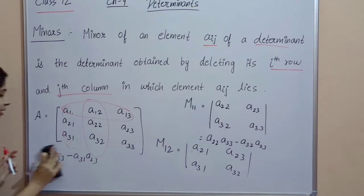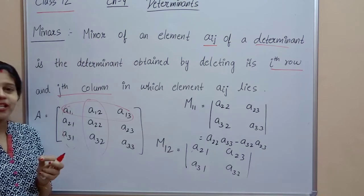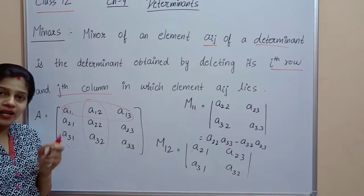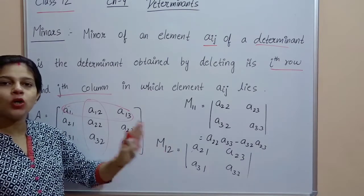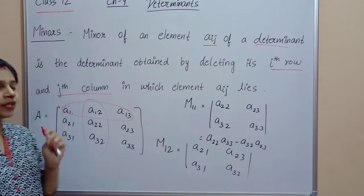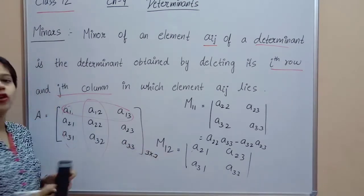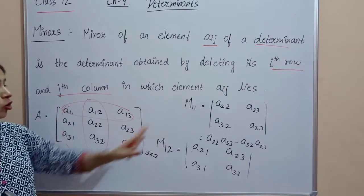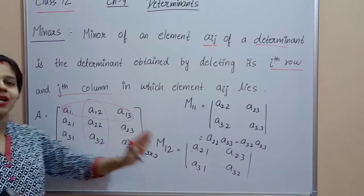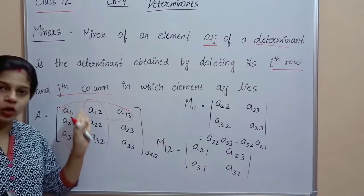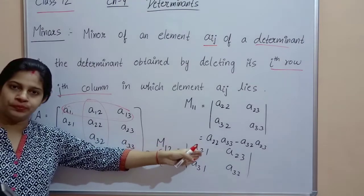Clear? So the best method to find a minor is: locate where the element is, delete its row and column, write the remaining elements as a determinant, and compute it. Notice that the original matrix was 3×3 (order 3), and after deleting one row and one column, the remaining determinant is of order 2.